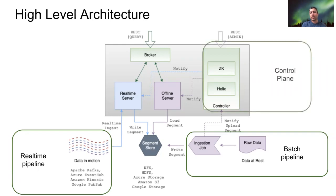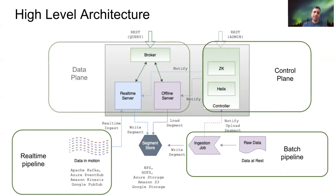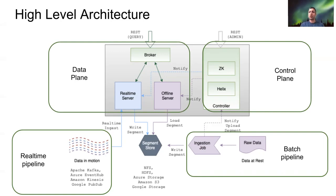On the top right, we have the controller, which uses Apache Helix to coordinate different cluster operations such as partitioning, replication, load balancing, and instance allocation. And finally, we have the data plane consisting of brokers and servers. Servers get the incoming data and organize it in a columnar format and make it available for local queries. Brokers get the queries issued by users or applications and then do a distributed scatter-gather to compute the final result.